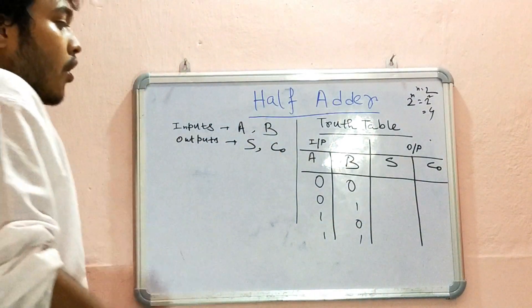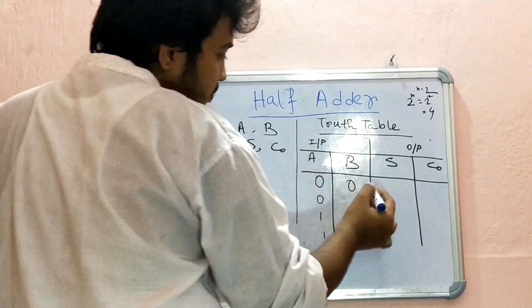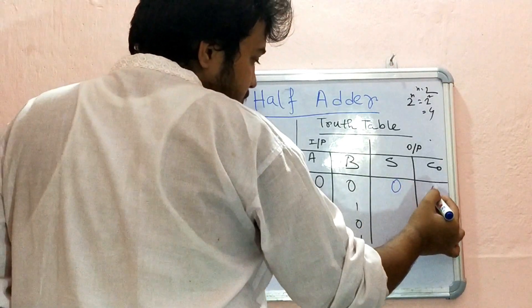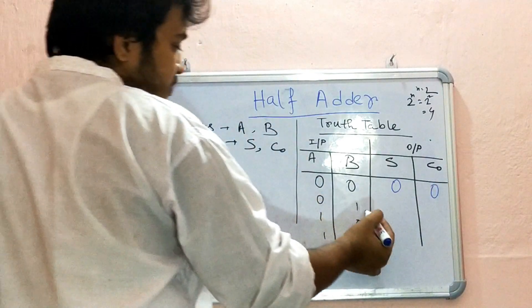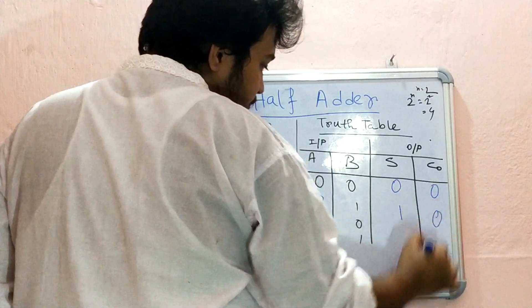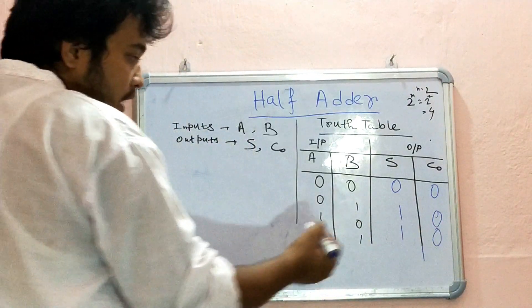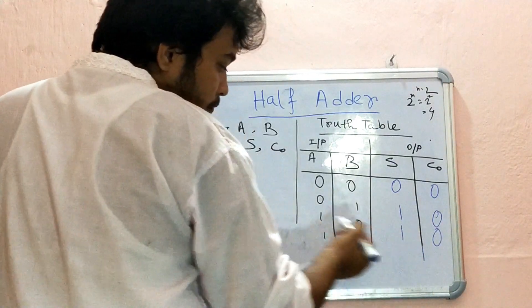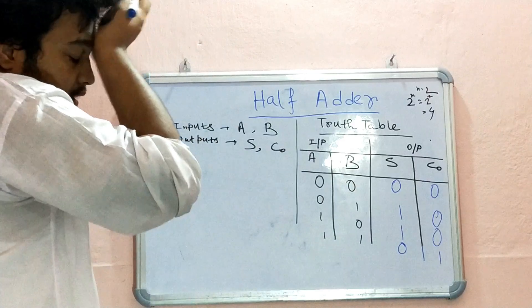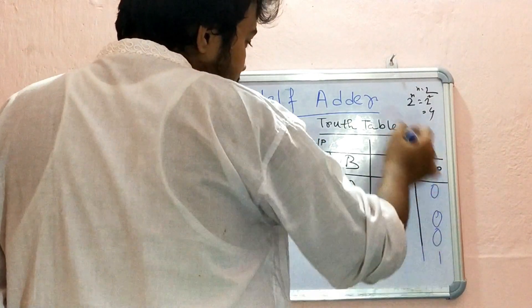If we go on adding these two single bit numbers A and B: 0 plus 0, then the sum is 0 and carry is also 0. Then 0 plus 1, sum is 1 and carry is 0. 1 plus 0, again 1, 0. If we add 1 1, then 1 plus 1, sum is 0 and carry is 1. We know this previously. So this is our truth table.